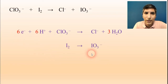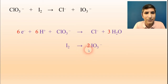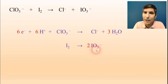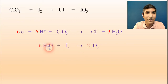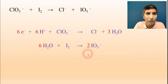In the second half reaction, I start by balancing the iodine atoms. I have two iodine atoms on the left but only one on the right, so I put a 2 on the right — now the iodines are balanced. Looking at the oxygens: I have 6 oxygens (3 times 2) on the left, so to balance them I add six water molecules to the left side. Then to balance those 12 hydrogens in the water, I add 12 hydrogen ions to the right side.